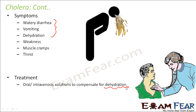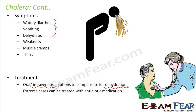The treatment for cholera involves oral or intravenous solutions to compensate for dehydration, because dehydration can be fatal — the correct amount of water must always be present in the body. The first step is to compensate for water loss through diarrhea and vomiting. Sometimes oral solutions don't work because the patient immediately vomits them out, so intravenous solutions are directly injected into the veins. Extreme cases can be treated with antibiotic medication, since cholera is a bacterial infection.